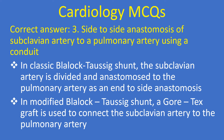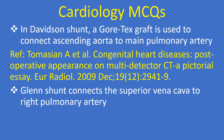In the classic Blalock-Taussig Shunt, the subclavian artery is divided and anastomosed to the pulmonary artery as an end-to-side anastomosis. In the modified Blalock-Taussig Shunt, a Gore-Tex graft is used to connect the subclavian artery to the pulmonary artery. In the Davidson Shunt, a Gore-Tex graft is used to connect the ascending aorta to the main pulmonary artery. The Glenn Shunt connects the superior vena cava to the right pulmonary artery.